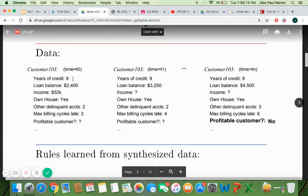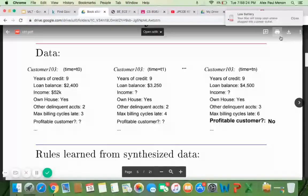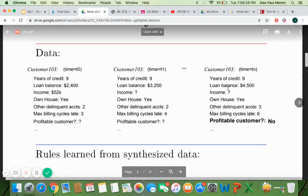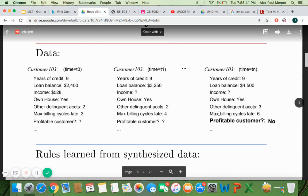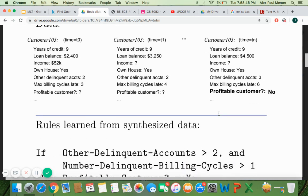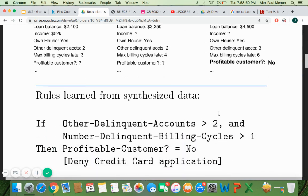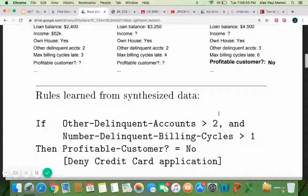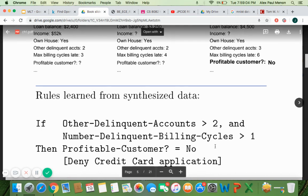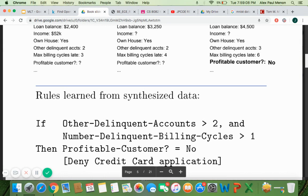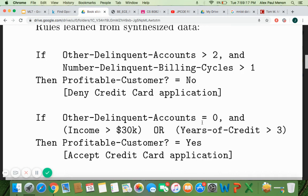So similarly, we have another data set where we are trying to find if a customer is going to be profitable. It depends on what is the year of credit, what is the loan balance, what is the income, if the person is having their own house or not, what other delinquent accounts and maximum billing cycles, late cycle. So how many times the customer has paid lately. So these are different data that are taken and we are trying to find if the customer is profitable or not. I mean, the bank can give a credit card application or not. So as you can see, if other delinquent accounts is greater than two and the number of delinquent bill cycles is greater than one, then the credit card application is denied. It is not given because maybe the customer is paying late and is not properly taking care of the account, then probably there is a problem.